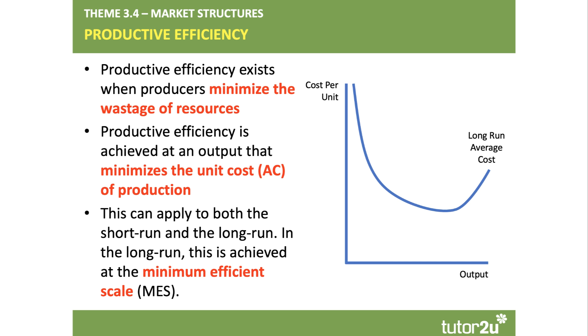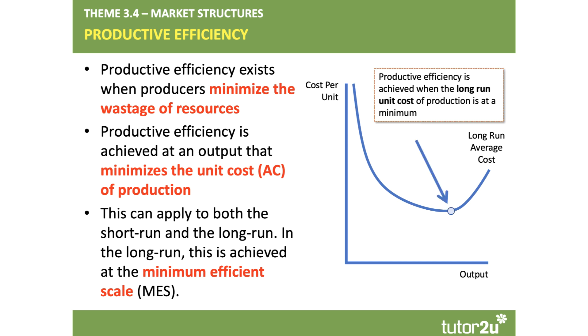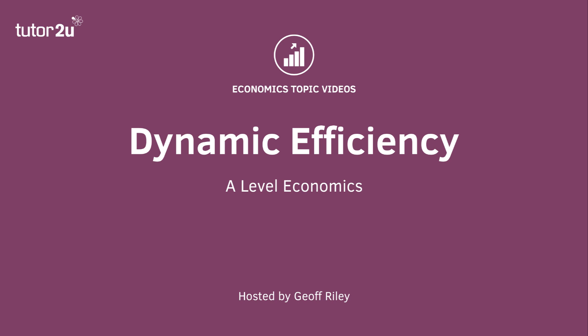In the long run, as shown in my diagram, this is achieved at the minimum efficient scale where the unit cost of production is pretty much at its lowest feasible level. In the next video, we'll take a look at dynamic efficiency.